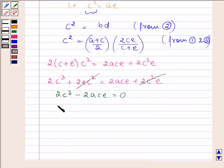Which further implies 2C times C squared minus AE is equal to 0.